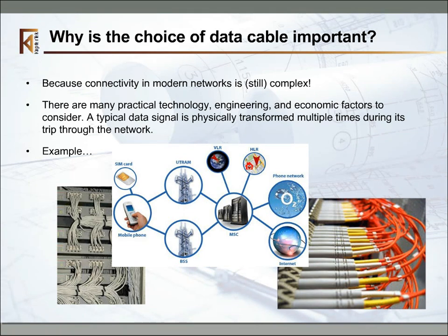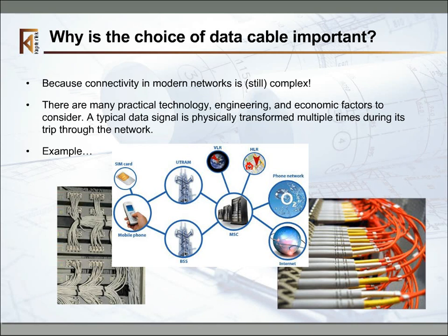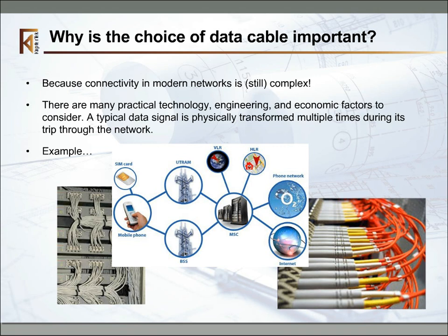From the switch, the call is routed over more cables to a switching center. From the switching center, the call data is sent to various databases to find out if the user is authorized, if the account is current, and if roaming, what roaming charges and privileges apply. Then an authorization message is sent back through the network to the local switch, ultimately to the mobile device, and the call set-up sequence begins — eventually the phone begins to ring. This all occurs billions of times per day, and it normally only takes a couple of seconds, even though the signal travels thousands of kilometers over coaxial cable, fiber optics, and twisted pair, passing through multiple routers and switches.